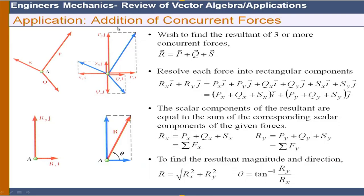We apply rectangular components for the addition of concurrent forces. Each force is broken into x and y components — force P into Px and Py, similarly S and Q. The resultant R has components Rx = sum of all x-components and Ry = sum of all y-components. The magnitude is R = √(Rx² + Ry²) and the direction is obtained from tan⁻¹(Ry/Rx).